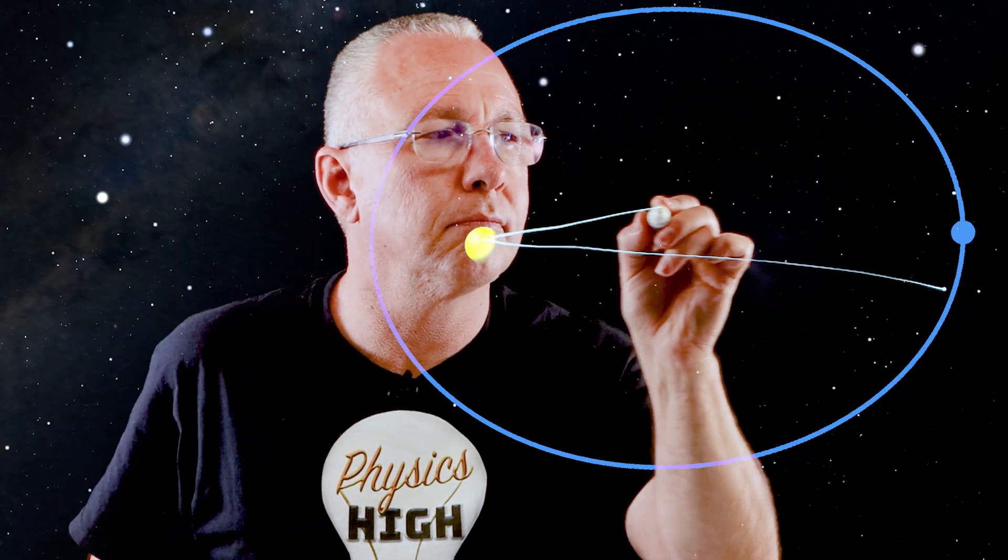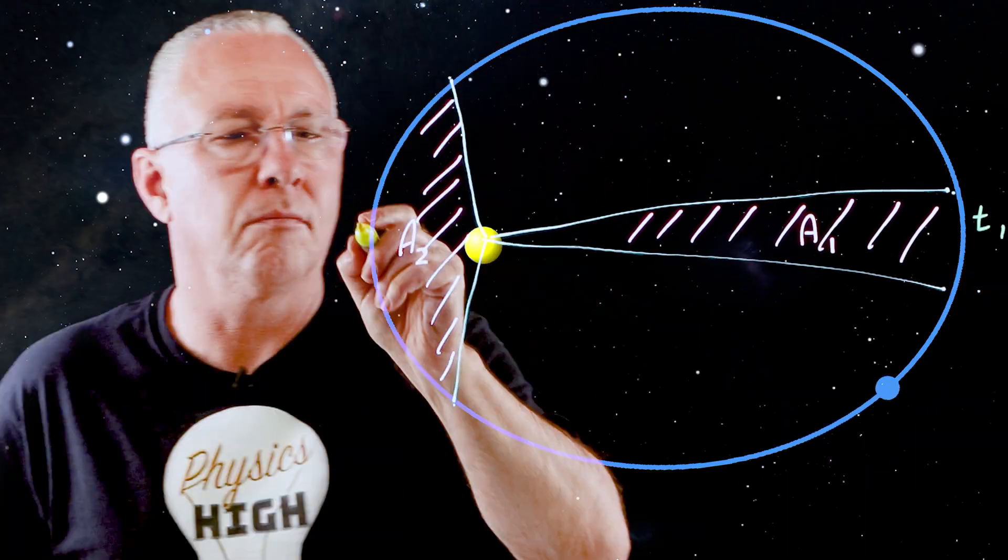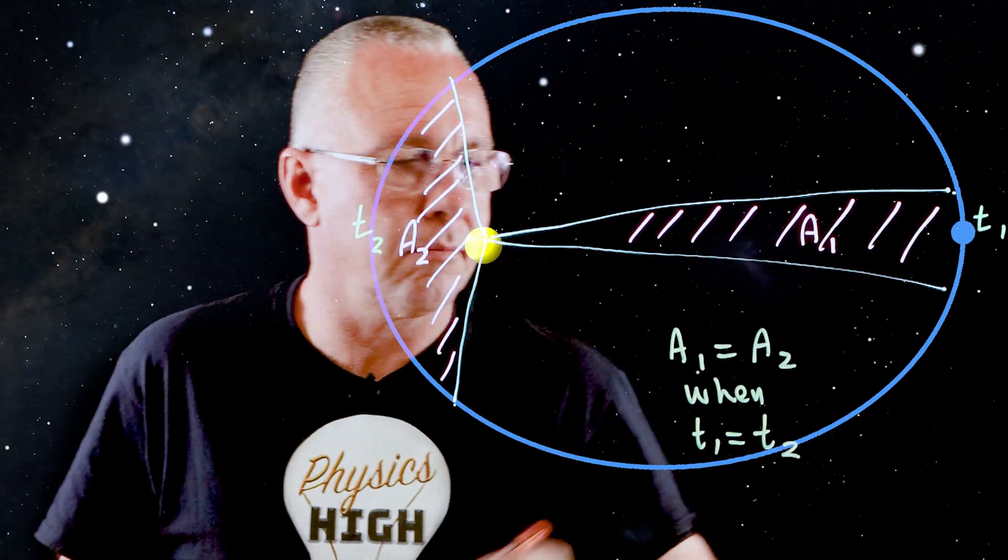If you draw a line from the planet to the Sun, the slice of space it covers in a month is always the same, whether the planet is zooming past the Sun, or chilling way out on the far side.